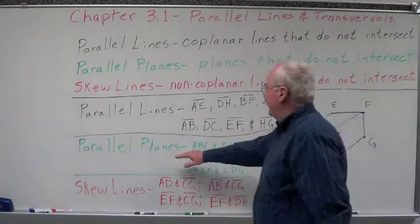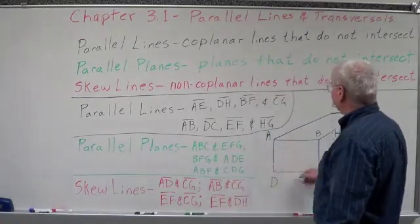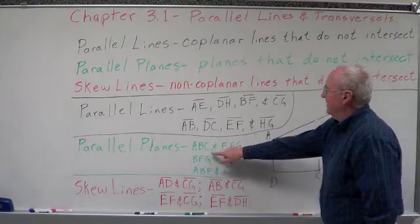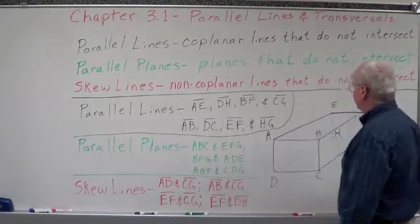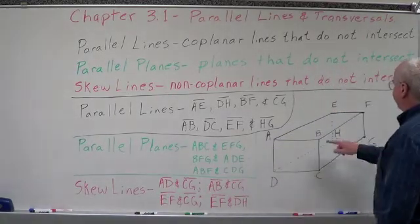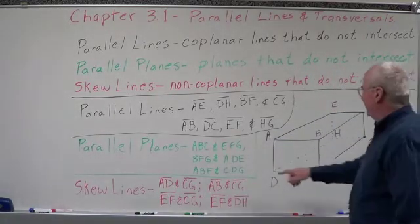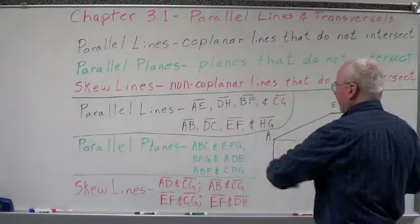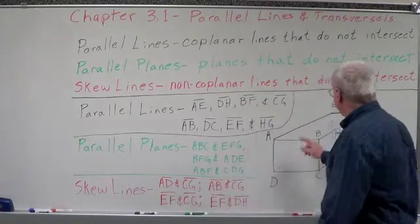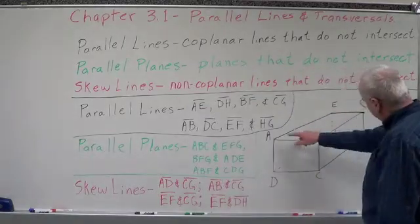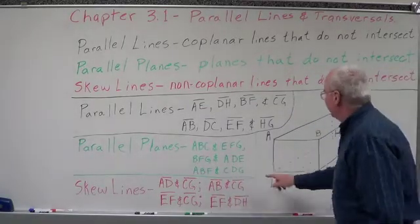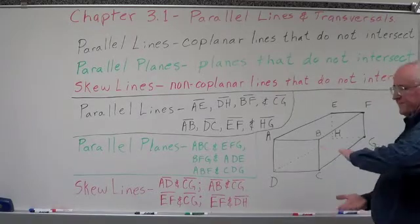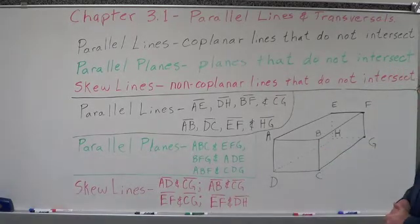For parallel planes in the box: plane ABCD — the front — is parallel to plane EFGH — the back. Plane BFG, the right side, is parallel to plane ADE, the left side. Plane ABF, the top, is parallel to plane CDG, the bottom. Those would be parallel planes.